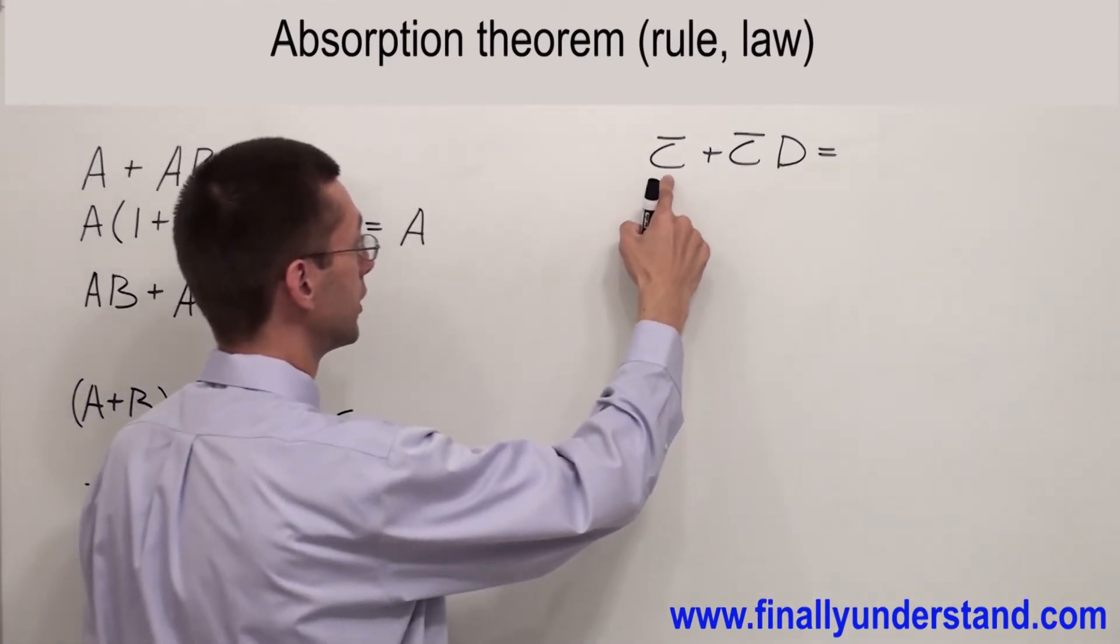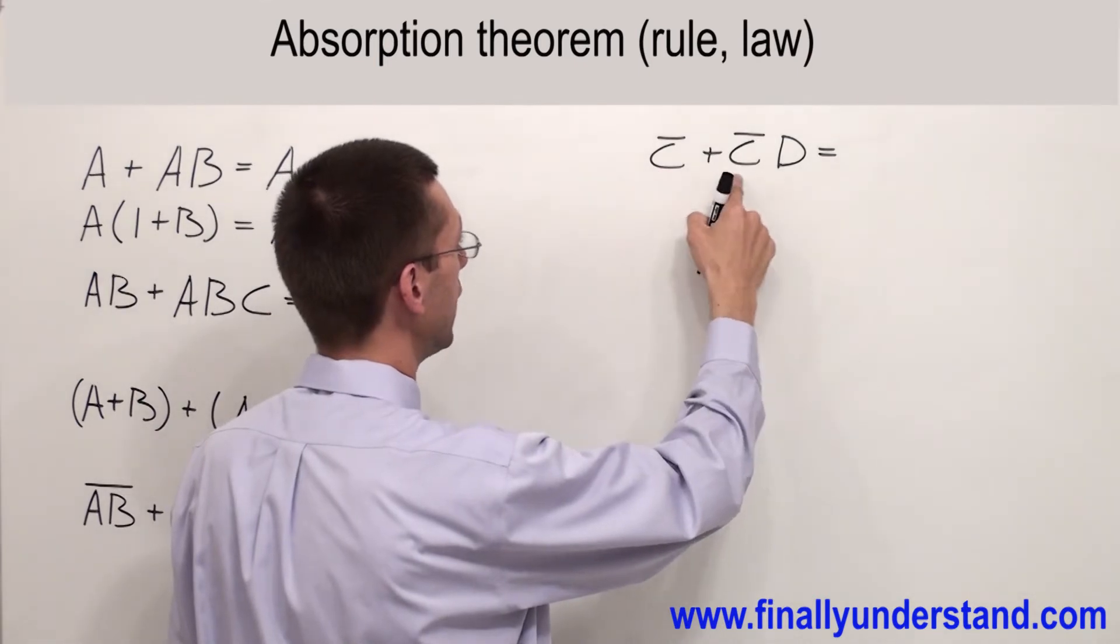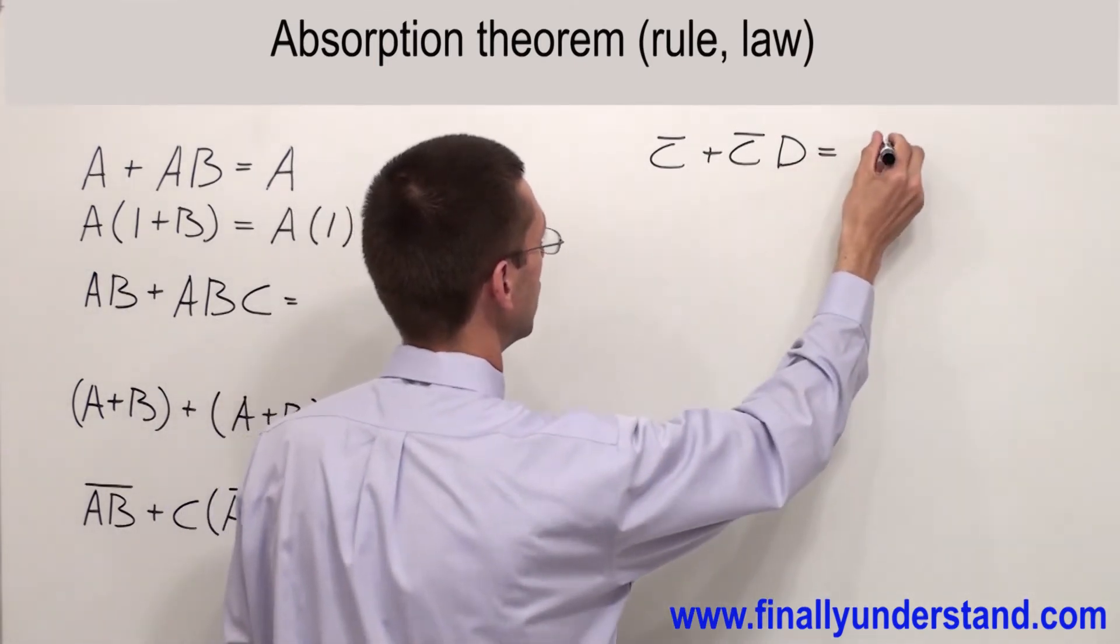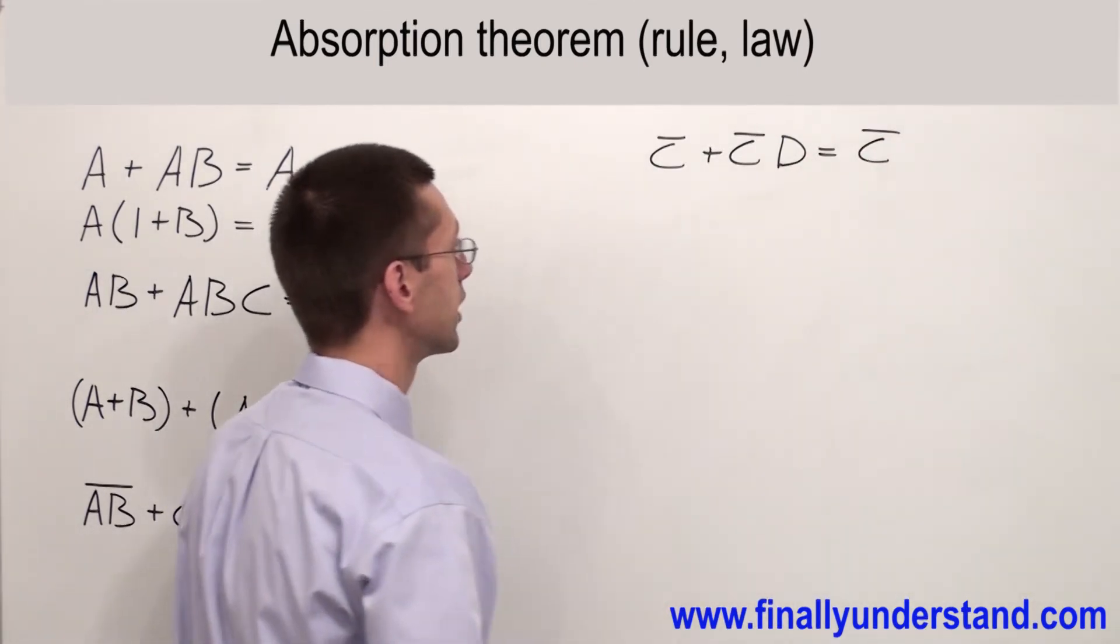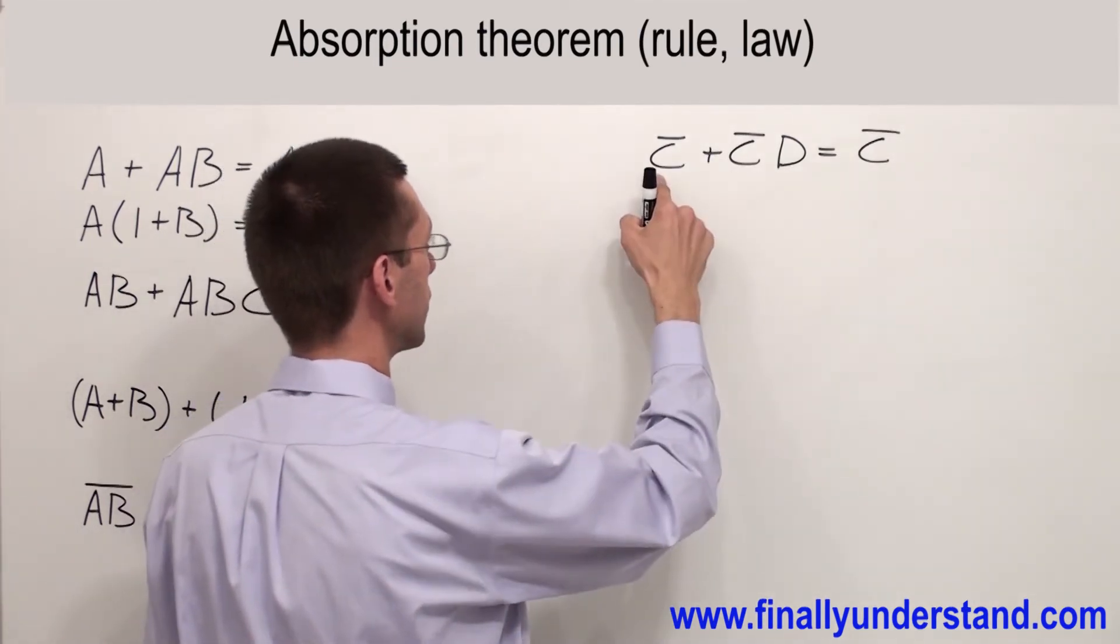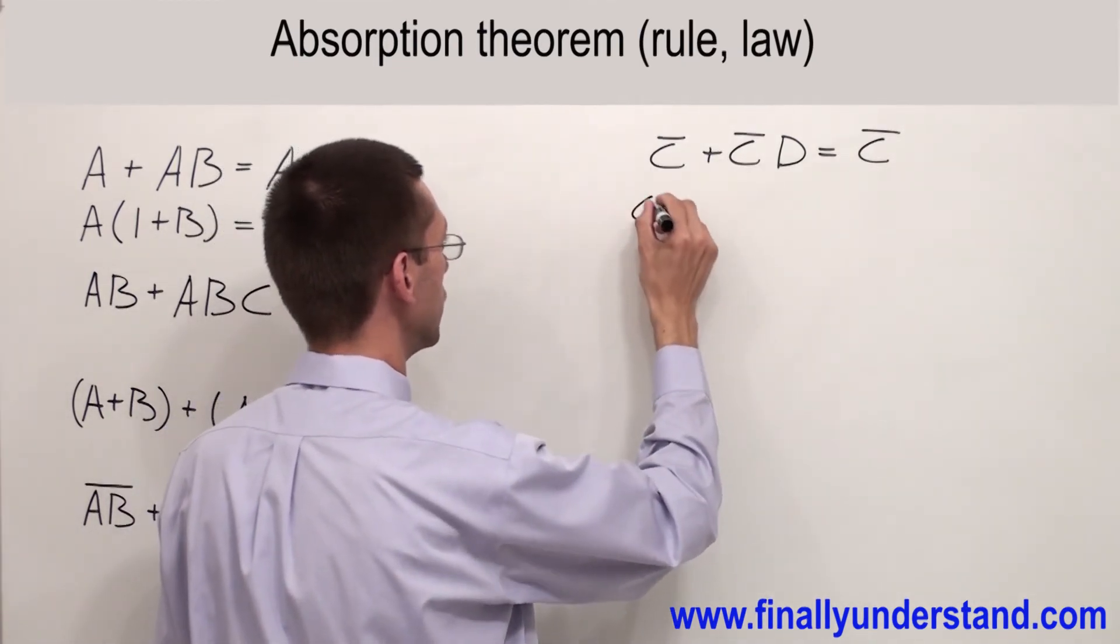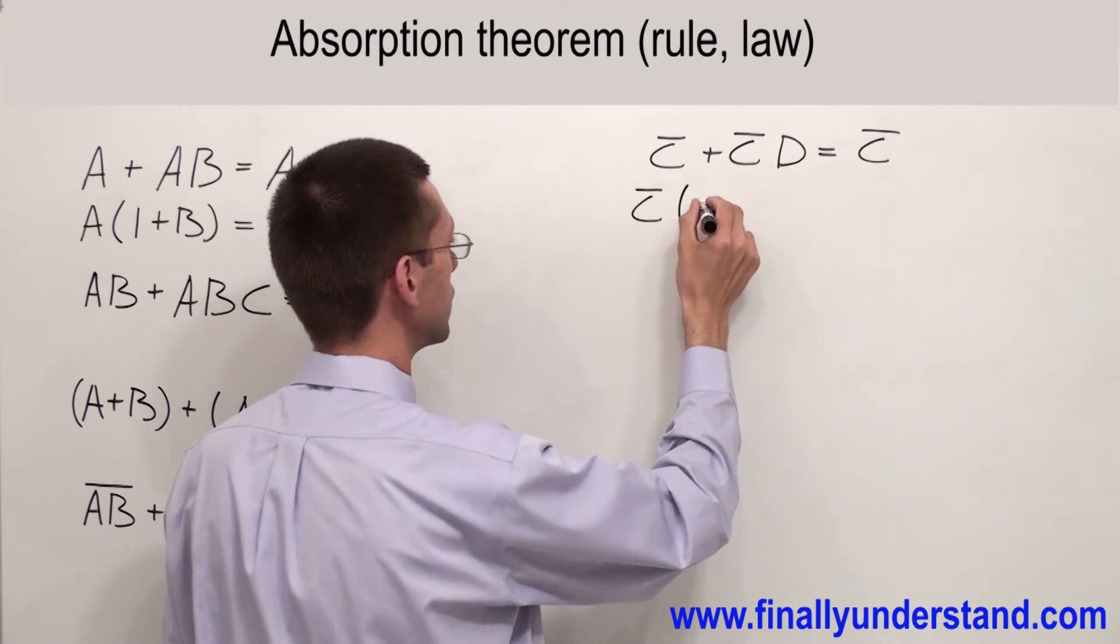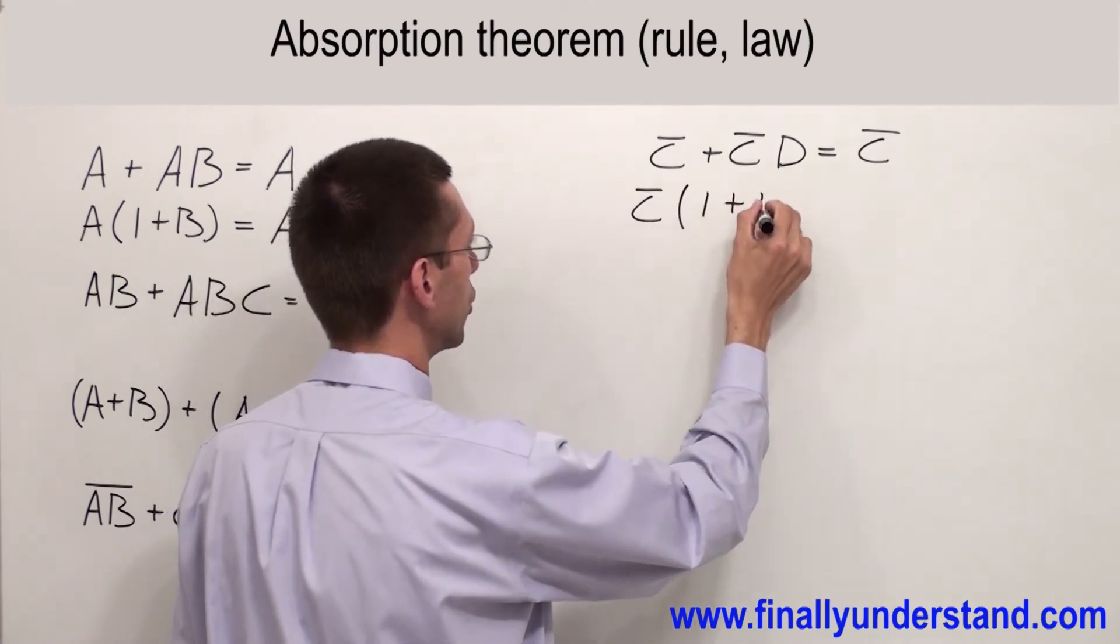Let's take a look at this example. Very similar. So my answer is going to be C NOT. Someone is going to ask why. Because I can factorize C NOT and inside of the parenthesis I'm going to have 1 OR D.